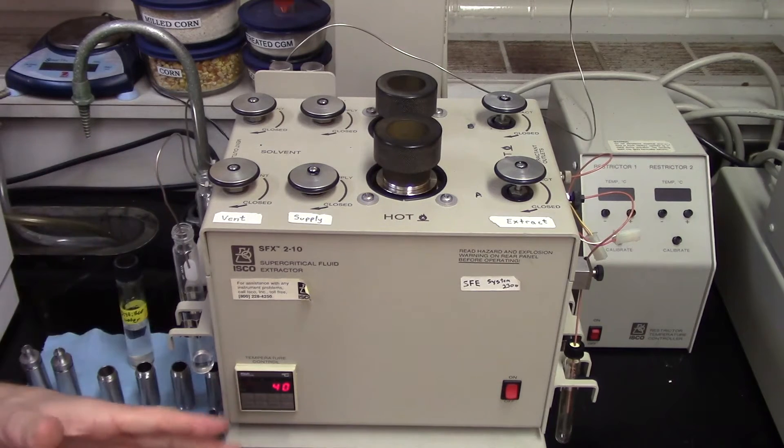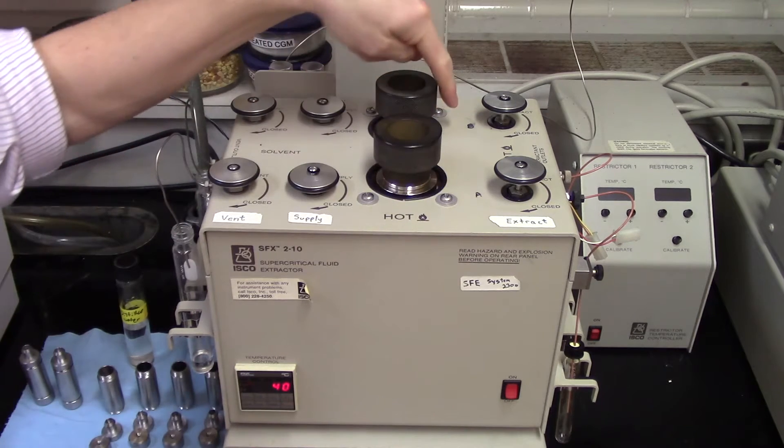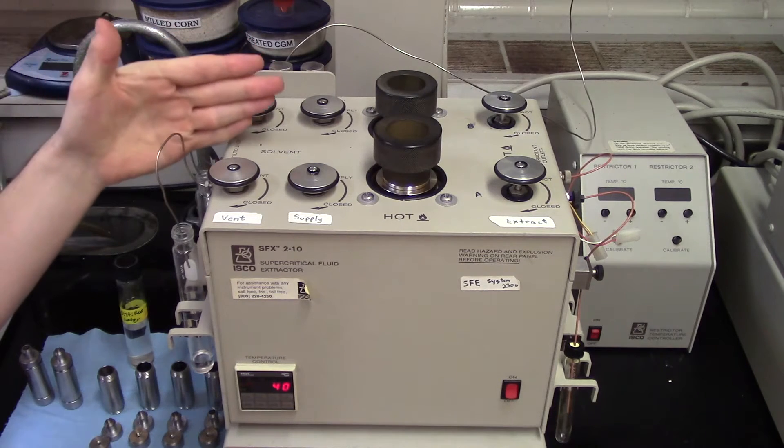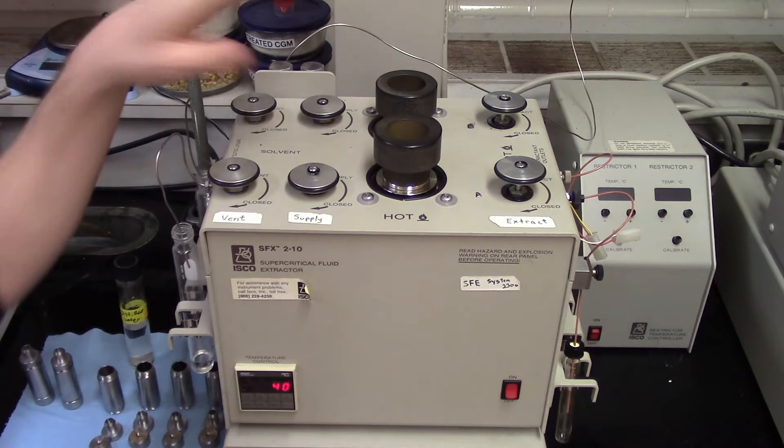This is the extraction unit where the actual extraction takes place. It has two extraction chambers labeled A and B. The extraction chambers are supposed to be separate, but we've noticed some leaking between chambers, so if accuracy is desired we advise using only chamber A.